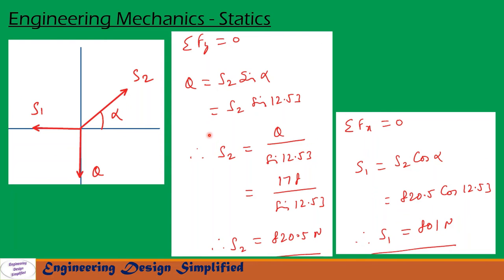Now let us resolve forces along the vertical direction. For vertical equilibrium, sigma Fy equals 0. Along the vertical, we have Q acting downwards. So Q equals the vertical component of S2, which is S2 sin alpha. Alpha is 12.53 degrees and Q is 178 N. After substituting these values and simplification, we get S2 equal to 820.5 Newton.